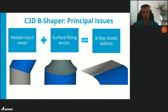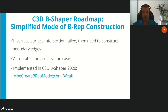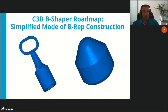We analyzed possible solutions and identified two main development directions for B-Shaper. The first approach is a simplified model for creating B-rep models: if surface-surface intersection calculation is not robust, B-Shaper creates a boundary edge from the corresponding segment edge. This approach is primarily suitable for visualization purposes. The simplified model has already been implemented in C3D Toolkit 2020. Examples show models with boundary edges that still look quite good — boundary edges exist on cylinder-torus connections, sphere connections, and so on.